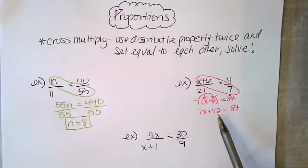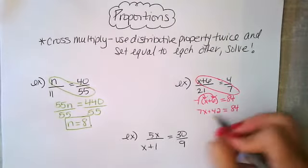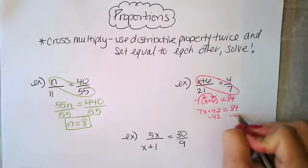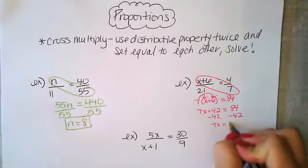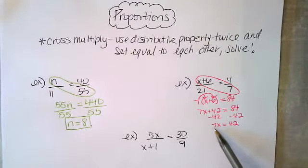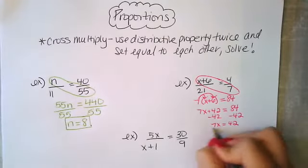We start the furthest away, which would be here. The opposite of adding 42 would be to subtract 42. And then to undo the 7x, which has a multiplication you just can't see it, we divide by 7.